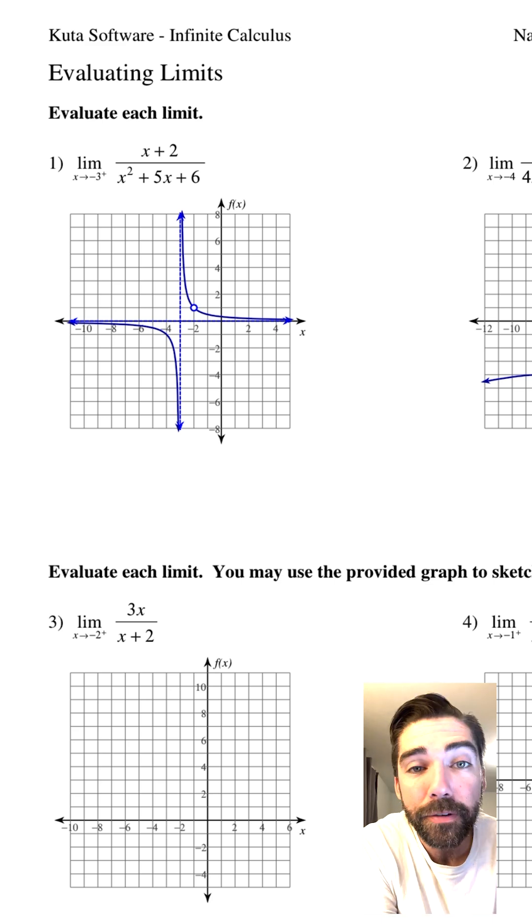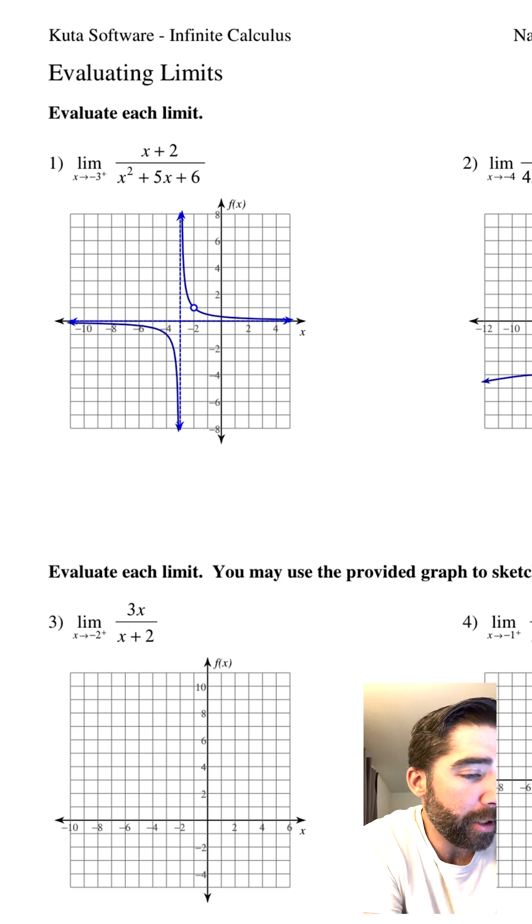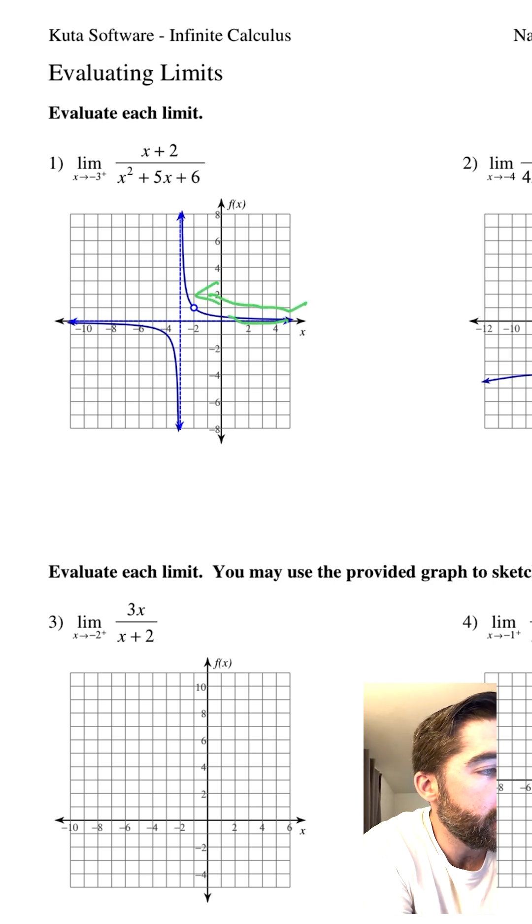As x approaches negative 3 from the right—that little plus symbol means from the right—so here we go, coming from the right, following our little graph. As we get to negative 3, what's happening? This guy's shooting upwards.